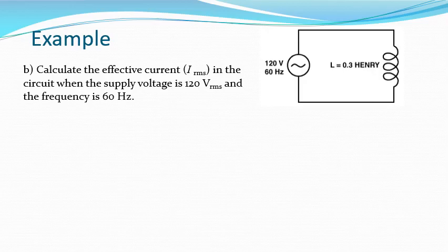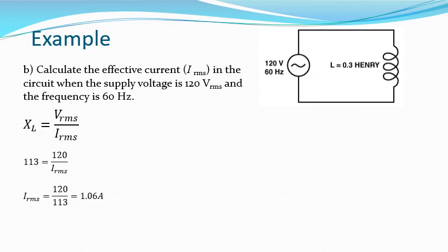We're then asked to work out the effective current for those particular conditions. We can use the fact that the inductive reactance is the ratio of the voltage to the current, having just worked out what the reactance is, and then rearrange to get the current for those conditions — 1.06 amperes.